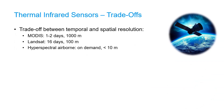When we use thermal infrared sensors we have to be aware of trade-offs. There are trade-offs between the temporal and spatial resolution. When we need very high temporal resolution, such as daily MODIS images, we need to deal with the fact that we only have 1 kilometer pixels. If we need less frequent images, like with Landsat each 16 days, we can have a higher spatial resolution, for example 100 meters.